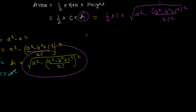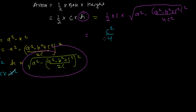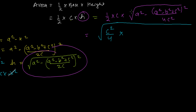To simplify, I bring c²/4 inside the root as well, since √(c²/4) = c/2. This gives Area = √[(c²/4) × (a² − ((a² − b² + c²)² / 4c²))]. Using the distributive law, this becomes √[(c²a²/4) − ((a² − b² + c²)² / 16)].